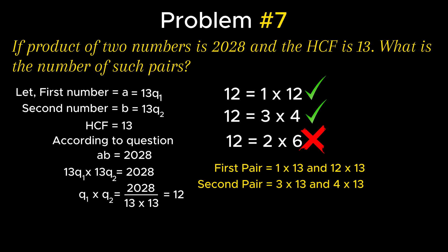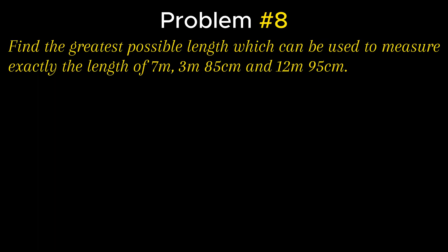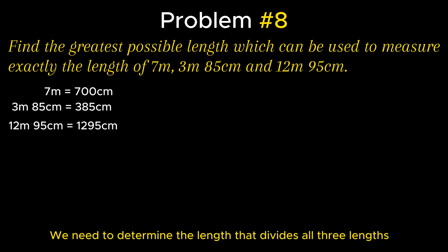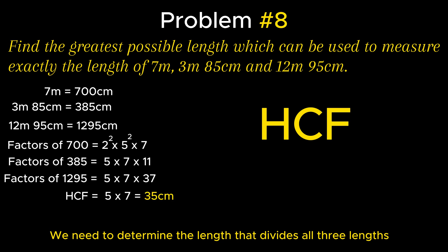Problem 8 states: find the greatest possible length which can be used to measure exactly 7m, 3m 85cm, and 12m 95cm. The lengths are converted to centimetres: 700cm, 385cm, and 1295cm. A length needs to be found that can divide all three given lengths, so the logic is HCF. The product of common factors with lowest powers equals 5 × 7 = 35cm. Thus 35cm is the length that can measure 7m, 3m 85cm, and 12m 95cm.